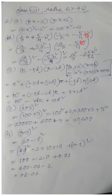Here a is a/3 and b is 5b²/4. So it becomes (a/3)² minus (5b²/4)². That gives a²/9 minus 25b⁴/16. So the answer is a²/9 minus 25b⁴/16.